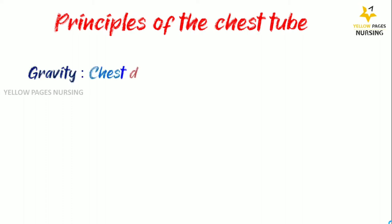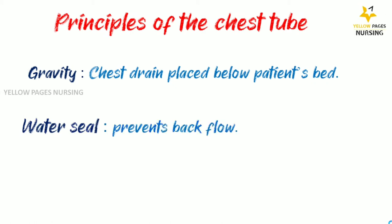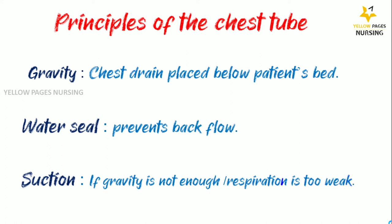Gravity: chest drain is placed below the patient's bed. Water seal prevents backflow. Suction is applied when gravity is not enough or respiration is too weak — specifically when gravity drainage is insufficient, when the patient's respiration is too weak, when there is an air leak into the pleural space, or when faster removal from the pleural space is needed.